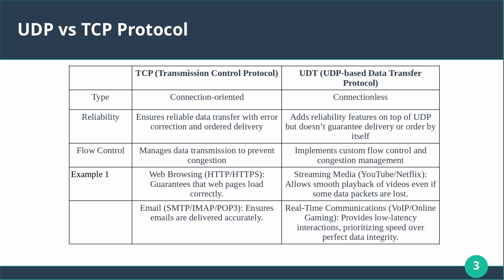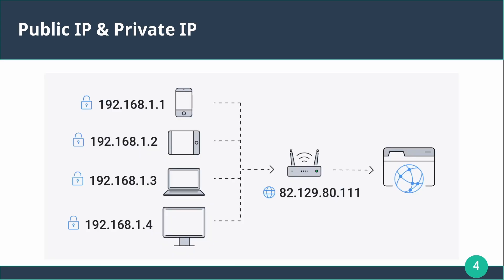Before learning more about WebRTC, we need to understand public and private IP addresses. An IP address is a unique identifier assigned to each device connected to a network. A public IP address is a globally unique address assigned to a device that is directly accessible over the internet, usually assigned by an internet service provider or network administrator.